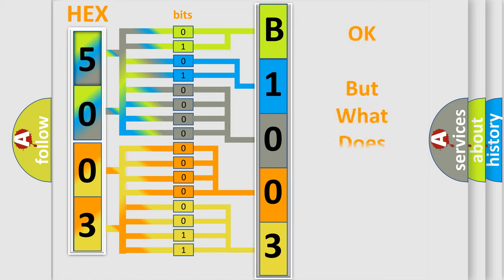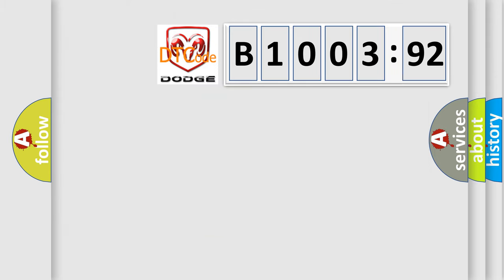The number itself does not make sense to us if we cannot assign information about what it actually expresses. So, what does the diagnostic trouble code B100392 interpret specifically for Dodge car manufacturers?